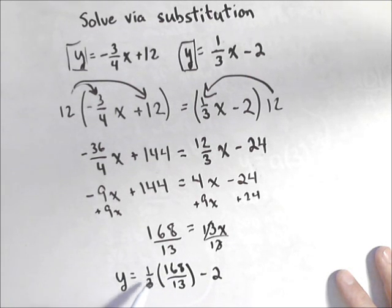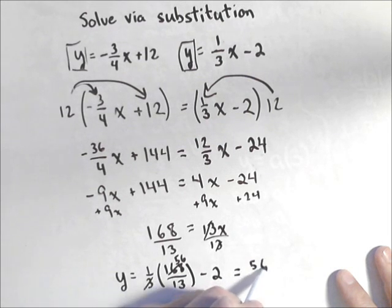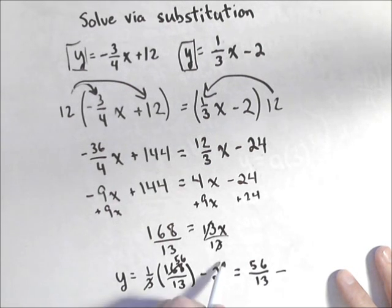Now this is divisible by 3, so if I take a 3 out of here I'm going to have 56, so I have 56 over 13 minus, now I need to make this have a denominator of 13.